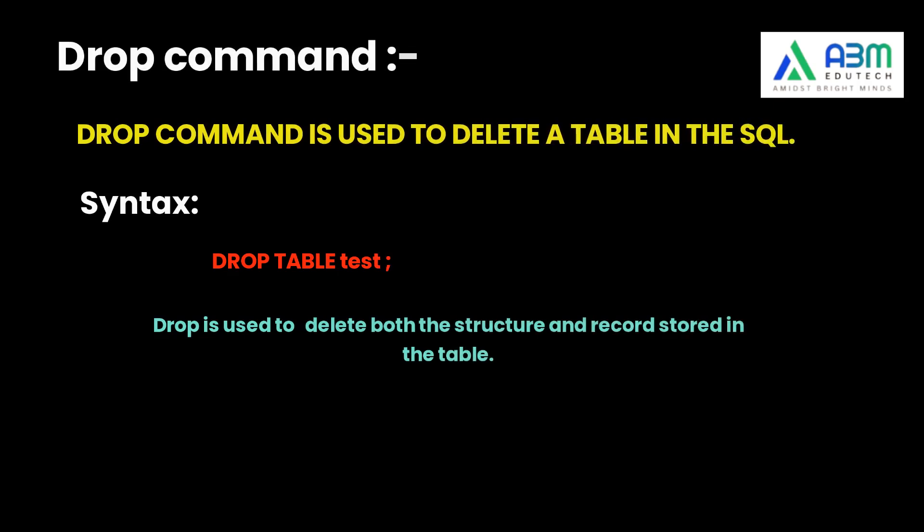Now we will learn about another DDL command: DROP. DROP is used to delete both the structure and records stored in the table. The syntax is: DROP TABLE table_name. For example, DROP TABLE test — here 'test' is the table name, and this query will delete the structure and records of the table.